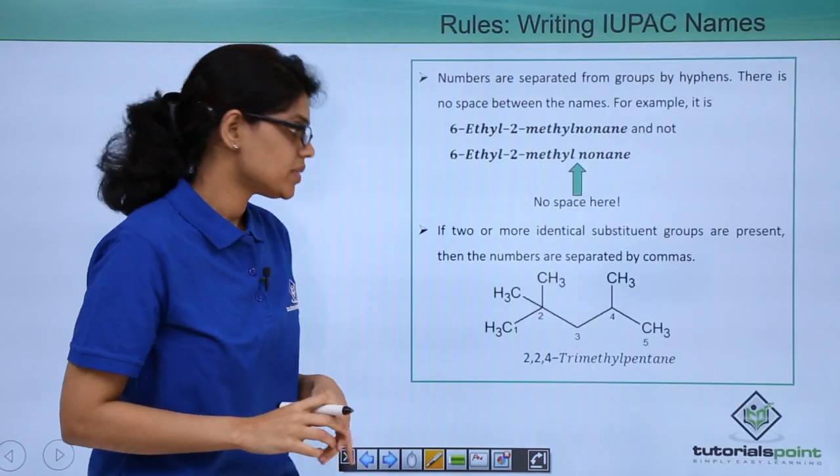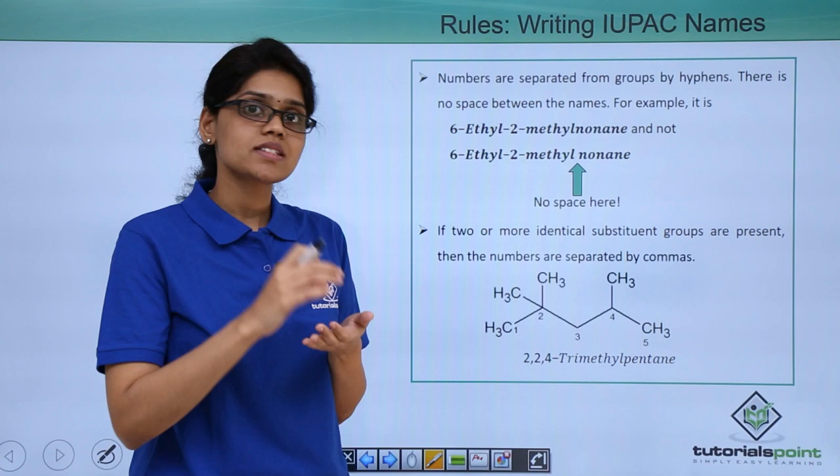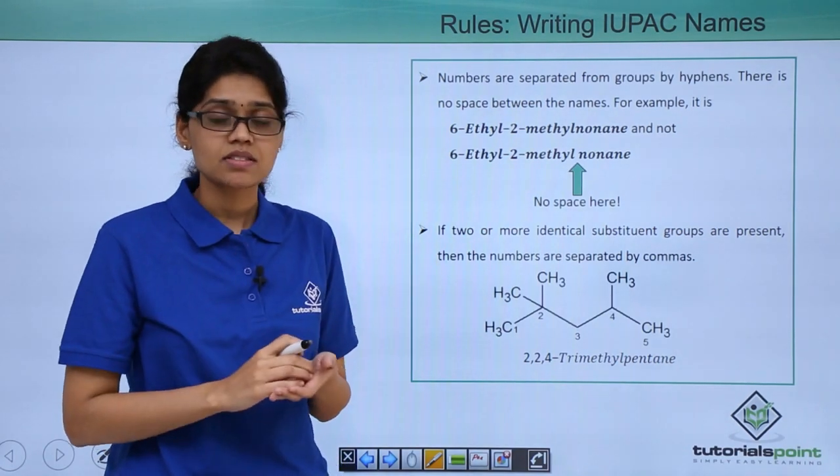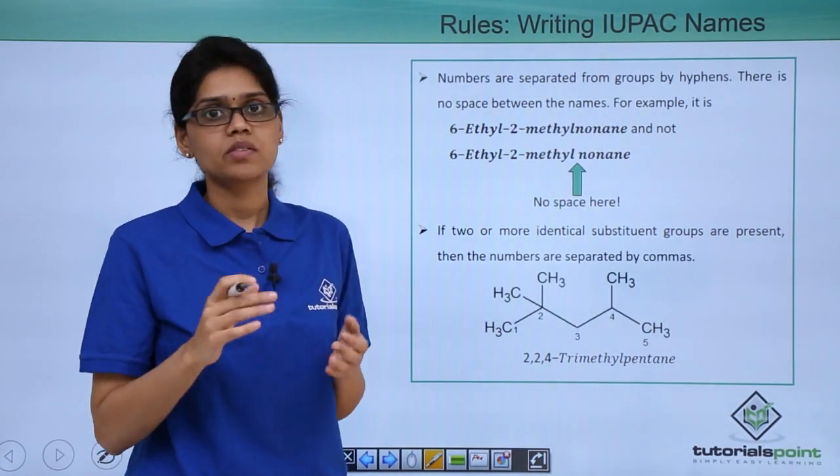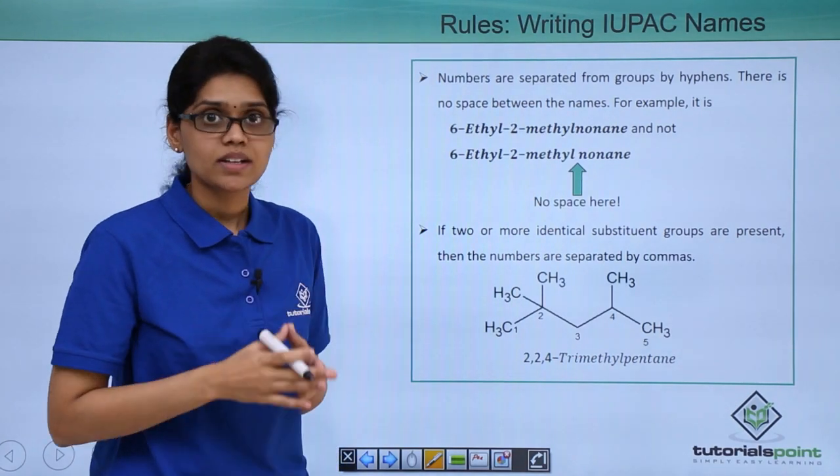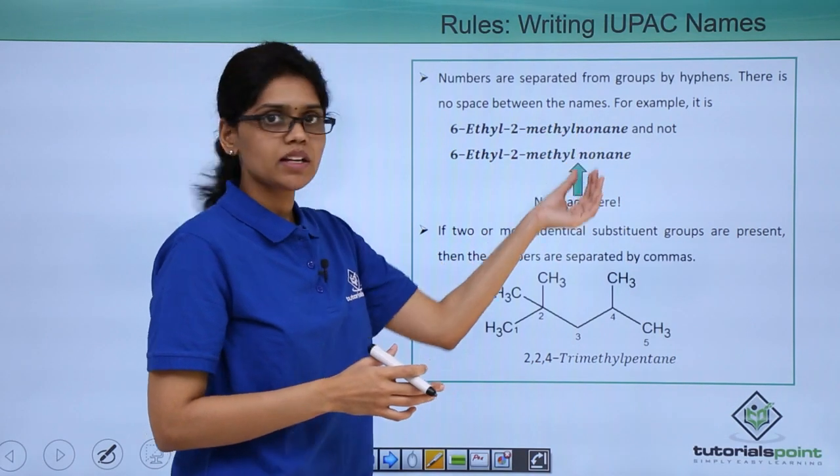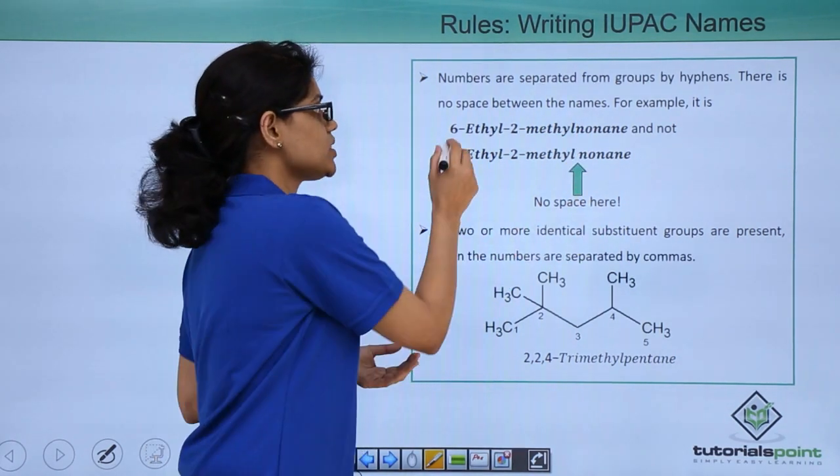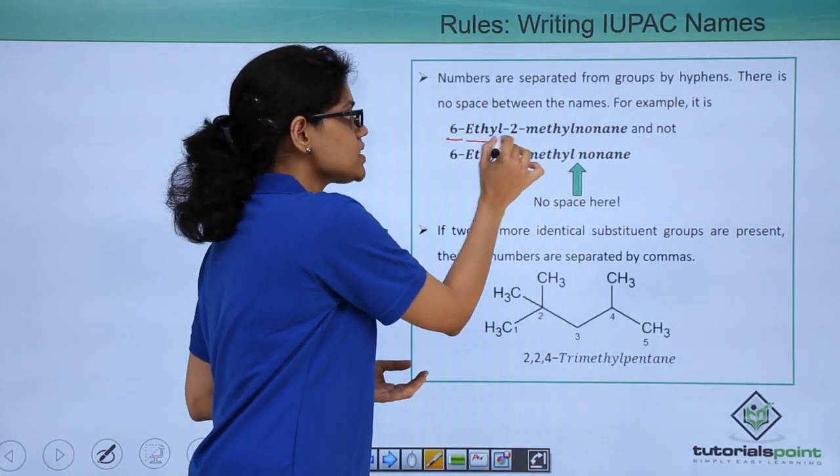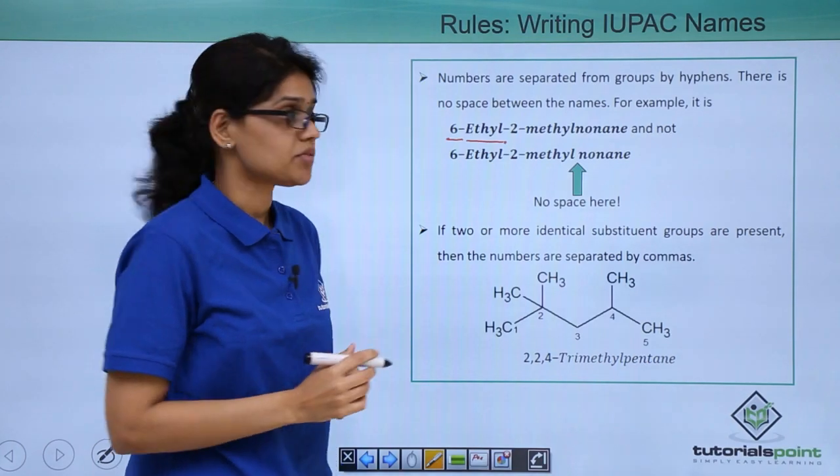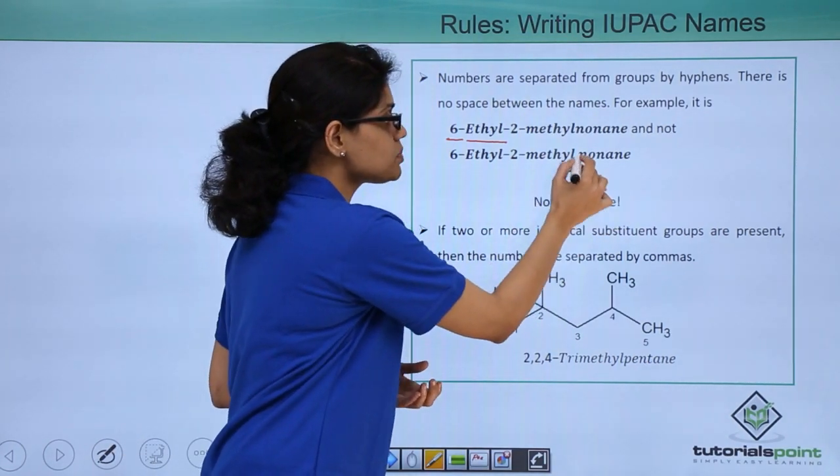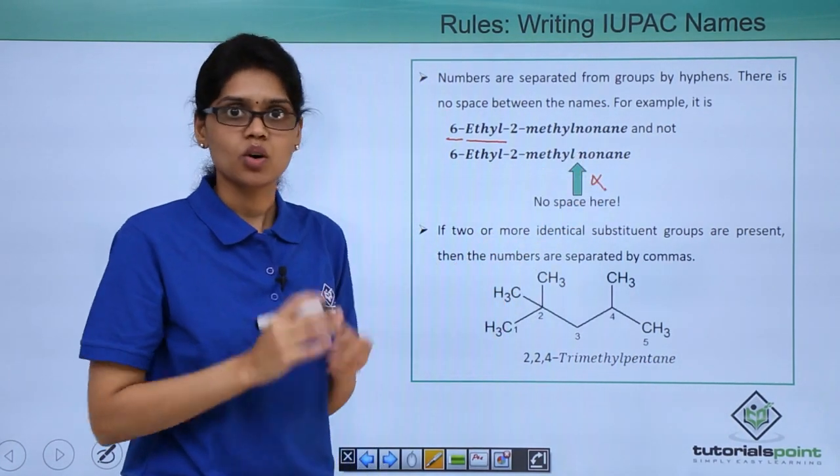The first rule to remember is that the numbers are essentially separated from the groups by hyphens and while you are writing the name there should be no space given between two names. To understand that let's look at an example here. You have 6-ethyl-2-methylnonane and if you look at this closely you can see that the number is essentially separated from the group using hyphen and there should be no space between two words here or two groups here.